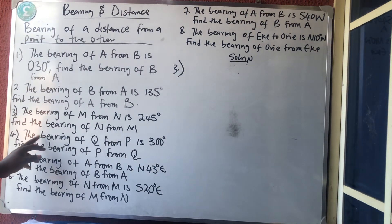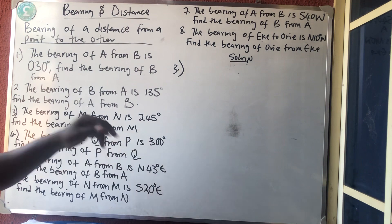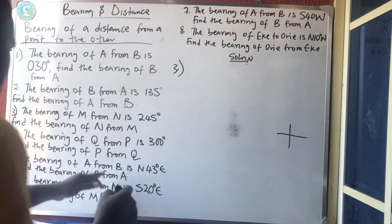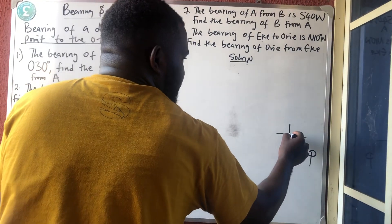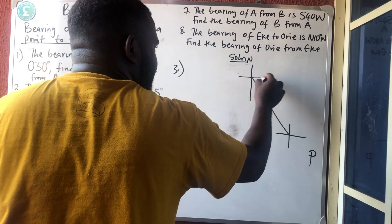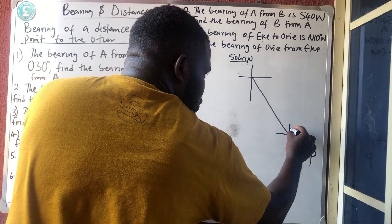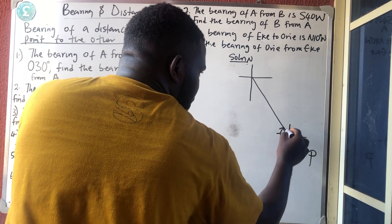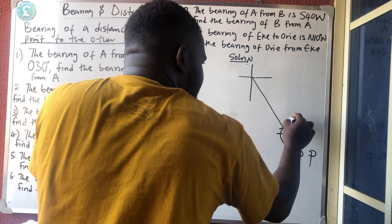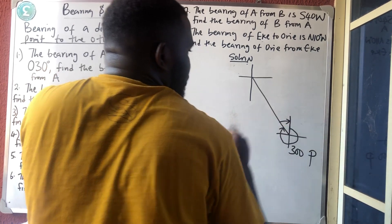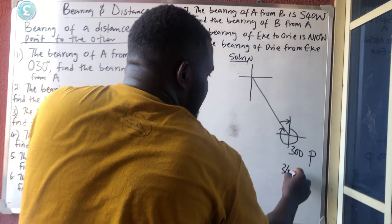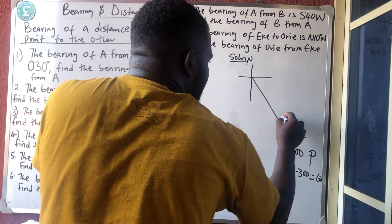Number four said that the bearing of Q from P is 300. And 300 will fall in the fourth quadrant, so I'm going to draw it this side. This is from P. 300 is this side — I'll draw my line like this. Cut straight first, before you cut like this. The 300 is from the north — you move and touch that line. You need an acute angle with the vertical. I know the total circle is 360, so the small angle should be 360 minus 300 equals 60. So here is 60.